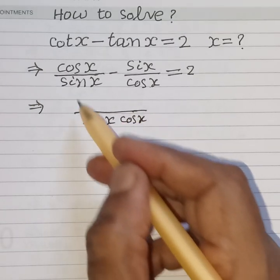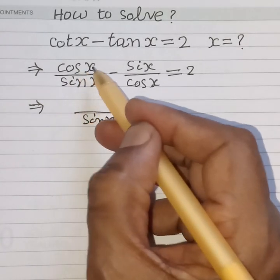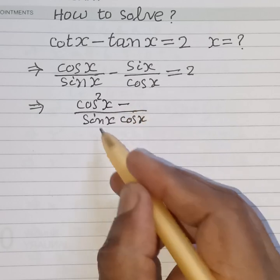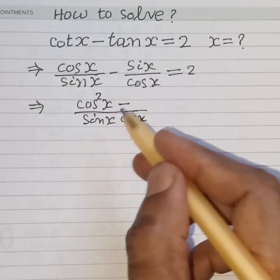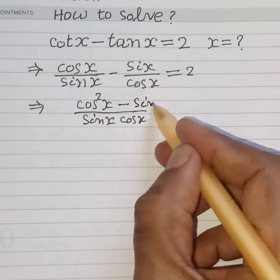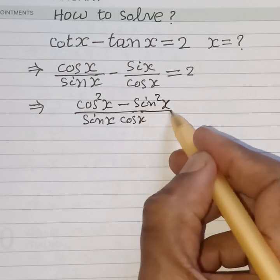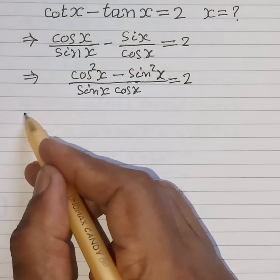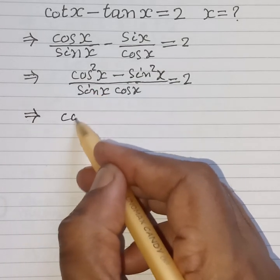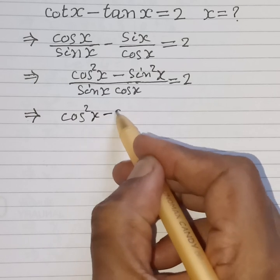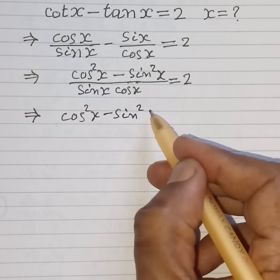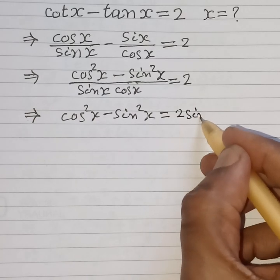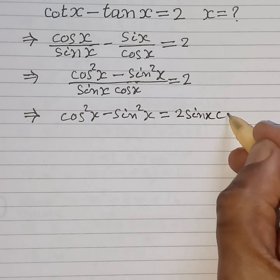Therefore, dividing through: cos x times cos x gives cos squared x, minus sin x times sin x gives sin squared x, all over sin x cos x, equal to 2. So the next step gives us cos squared x minus sin squared x equal to 2 times sin x cos x.